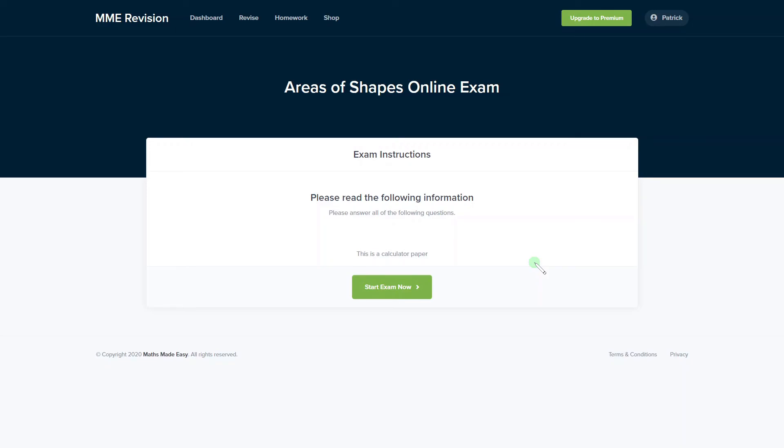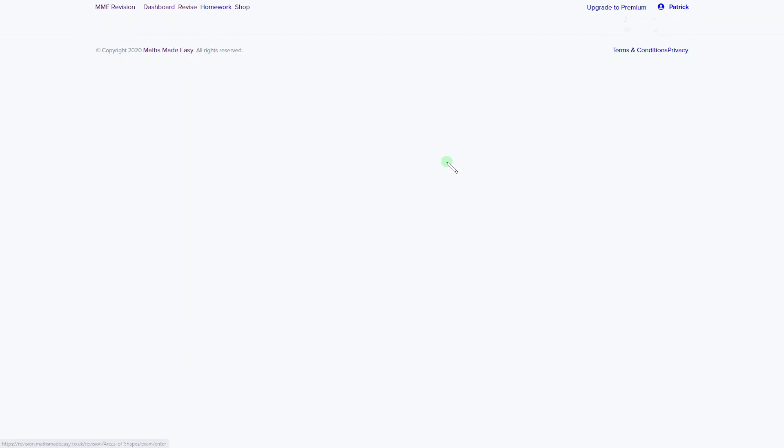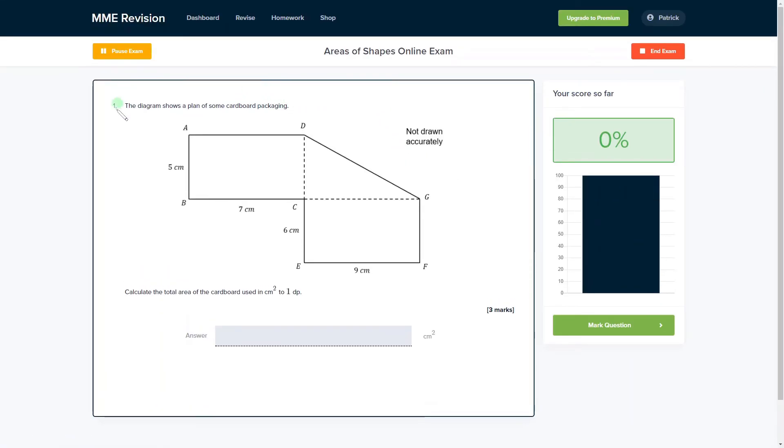If you'd like to get more practice with questions about the areas of shapes, we do have an online exam available through our revision platform. Here you'll find plenty of questions, a range of different question types, so you get plenty of practice. You get instant feedback on each and every question, so this will allow you to keep track of the areas that you need to improve on. If you'd like to know more or take the exam, you can click the link below—it'll take you straight there.